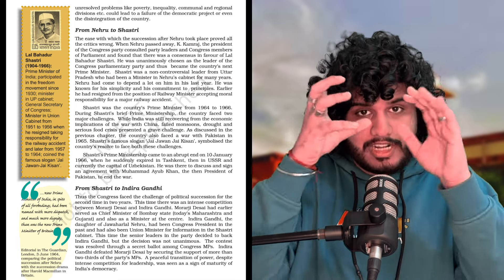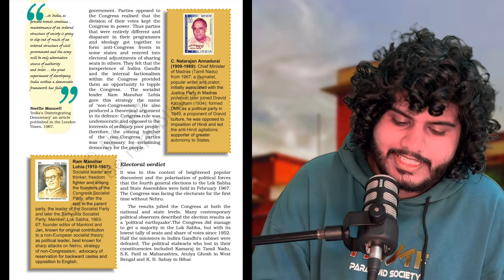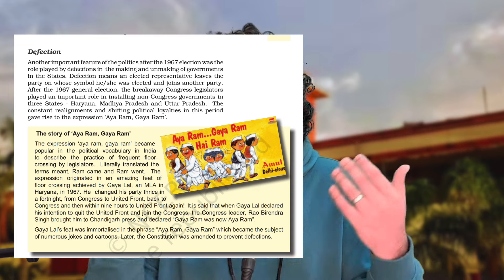The final chapter is Challenges to and Restoration of the Congress System, which carries 4 marks. The 1967 elections can come as a 4-marker. Non-congressism can come as a 1 or 2-marker. Important names include Ram Manohar Lohia, N.C. Natarajan, and Anadurai. The concept of defection and the Aaya Ram Gaya Ram cartoon/concept are important. The split in Congress — Congress O versus Congress R (Requisitionists) — can become 4 marks. What was the Syndicate — 1 mark. The 1969 and 1971 elections can come as 4-markers.